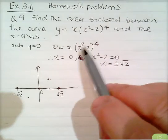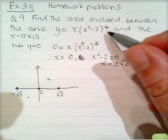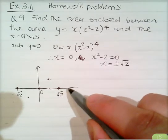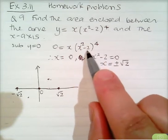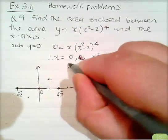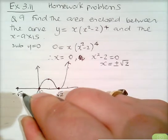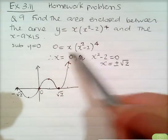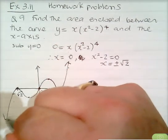With x squared minus 2 to the power 4, the curve bounces off the x-axis similarly to a double root. At x equals root 2, which is roughly 1.4: when x is 2, we get 4 minus 2 is 2 to the power 4 is 16, times 2 gives 32 — a large value. Similarly at negative 2, we get negative 32.